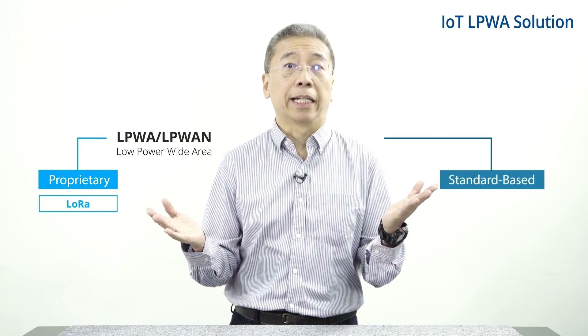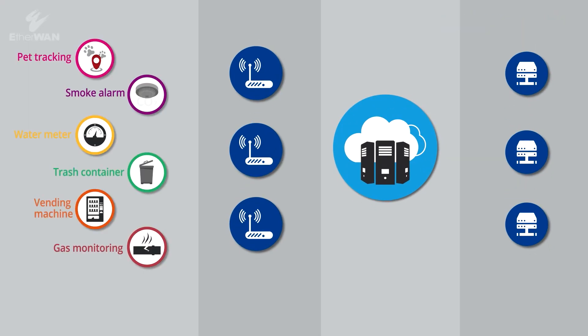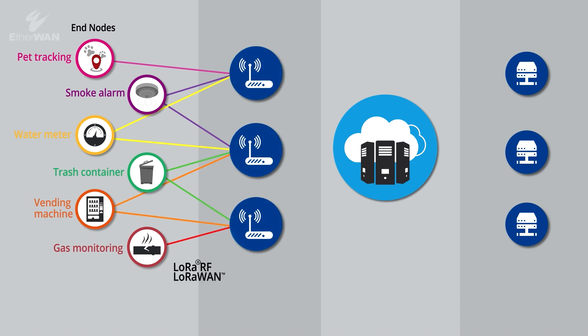Low Power IoT is distinguished as LoRa WAN and NB-IoT. There are four sessions for LoRa WAN. End nodes deliver sensor data via LoRa radio frequency to a LoRa gateway. An RF adapter is needed due to the fact that some legacy sensors have no RF capability. The LoRa gateway delivers all LoRa RF data via LAN to the next stage — the LoRa network server — for data arrangement after receiving.